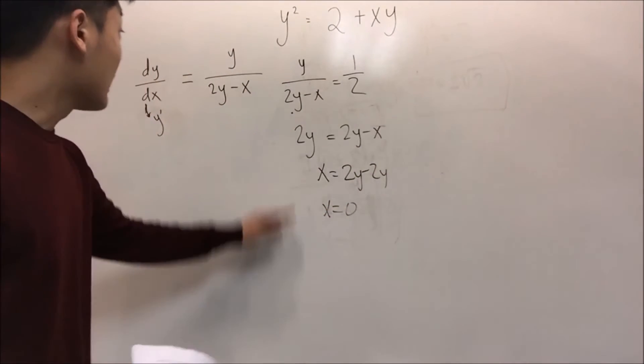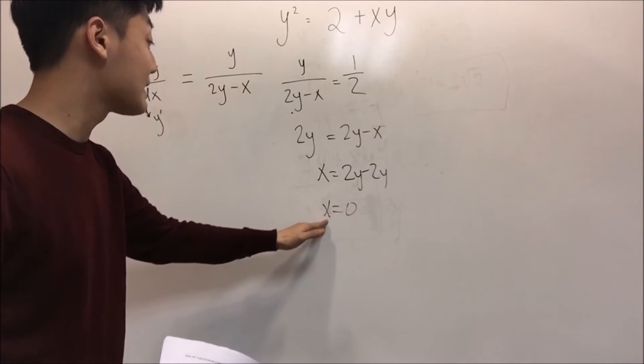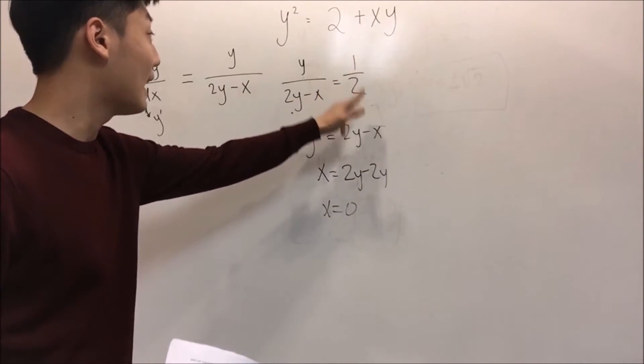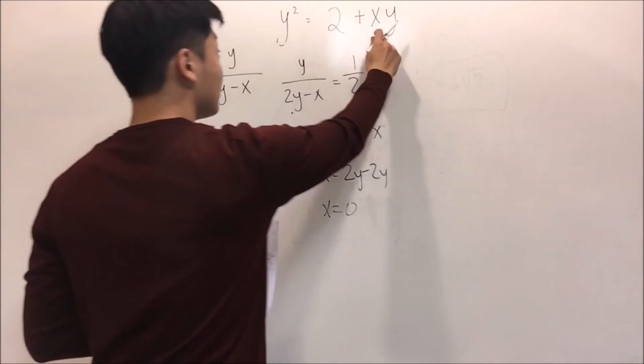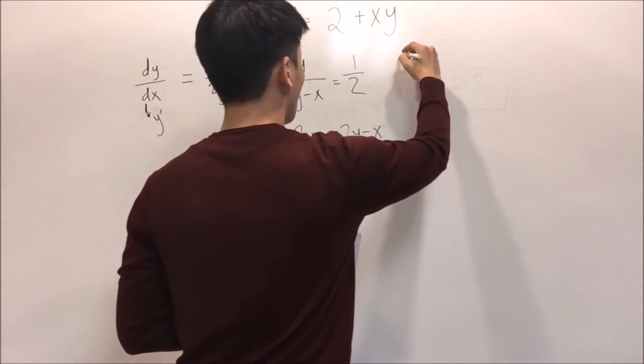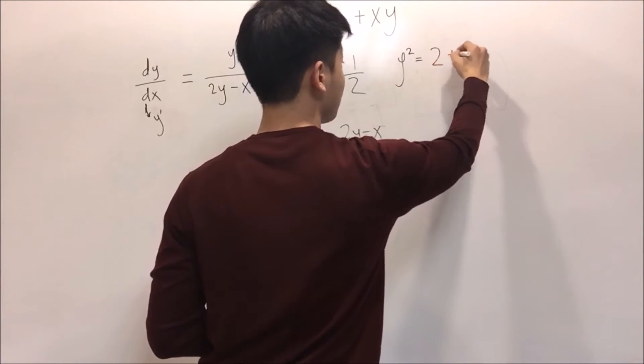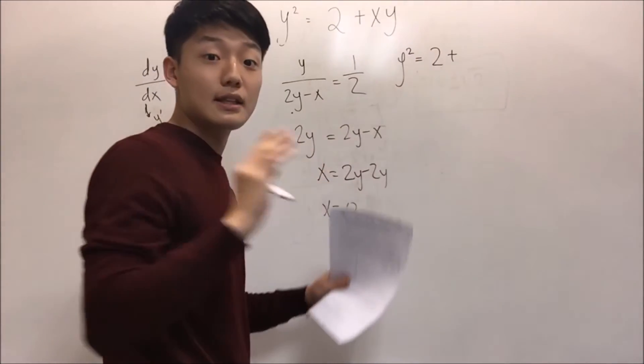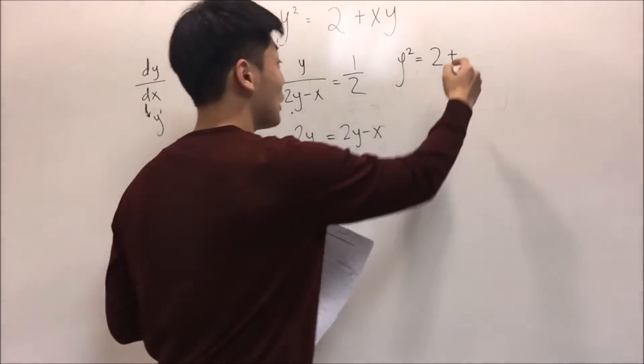This means that at this function, which is the slope, when x equals zero, the slope is one-half. We have to figure out the coordinates of y. Let's use the original function, which is y squared equals 2 plus, and because we're plugging in zero here, what times zero is always zero. So it will become zero.